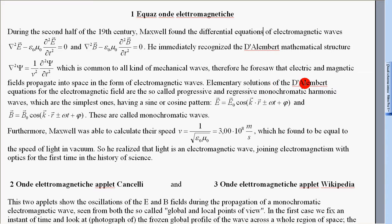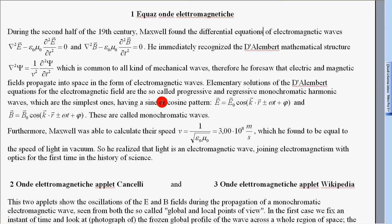Elementary solutions of the d'Alembert equations for the electromagnetic field are the so-called progressive and regressive monochromatic harmonic waves, which are the simplest ones having a sine or cosine pattern. These are called monochromatic waves.